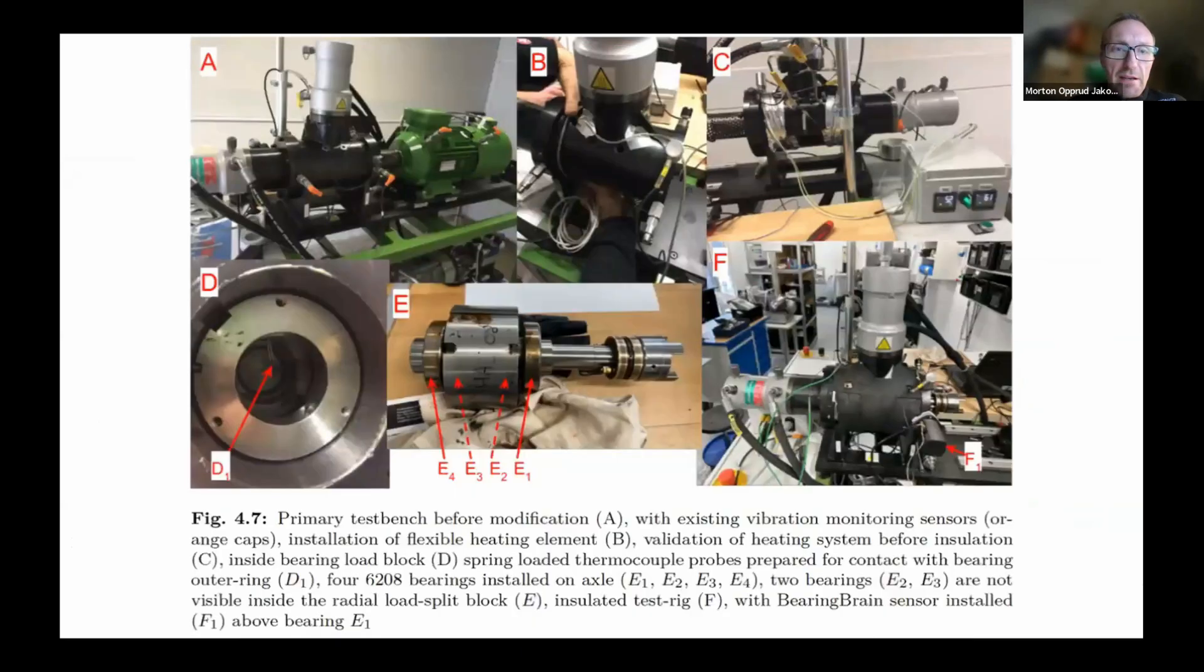Here's the test rig that was used for the primary experiments. It's a motor, and it's a rig with four large bearings installed, and it can apply axial and radial load, and then it's retrofitted with some heating elements, so we can change speed, load, temperature, and thereby change the lubrication conditions and try to mimic what would be seen in an industrial setting and capture the data from this using our prototype sensor.